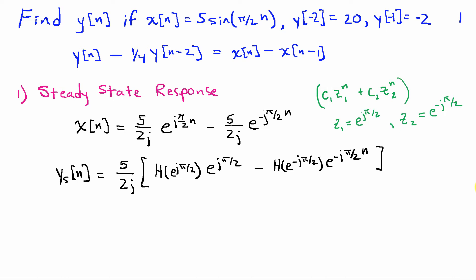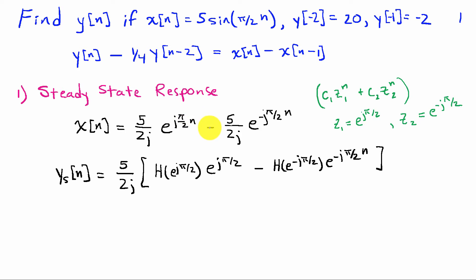We'll look first at the steady-state response. Recall that we want to write the input in the form of some combination of exponential signals z^n. Since we have a sine in this case, we can write that as a combination of two exponential signals where z1 = e^(jπ/2) and z2 = e^(-jπ/2). So we write our input x[n] as (5/2j) e^(jπ/2 n) - (5/2j) e^(-jπ/2 n).